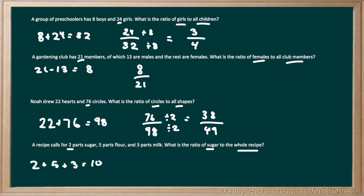To write our ratio of part to whole, we need our part on top, which is 2 parts sugar, and on the bottom is our whole, which is a total of 10 parts in the recipe. This 2 over 10 can be reduced down if we divide the top and bottom by 2, so we're left with 1 over 5 as our reduced part-to-whole ratio.